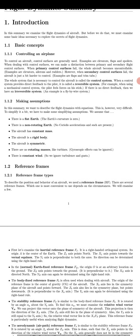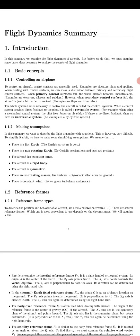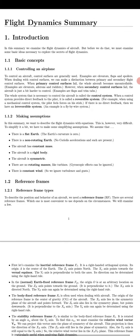I'm going to read this to you. Flight dynamics summary. I'm not going to read everything, but I'm going to read 1.1.2, making assumptions. In this summary, we want to describe the flight dynamics with equations. This is, however, very difficult. To simplify it a bit, we have to make some simplifying assumptions. We assume that there is a flat earth. Earth's curvature is zero. There is a non-rotating earth. No Coriolis accelerations and such are present.